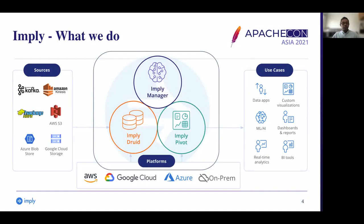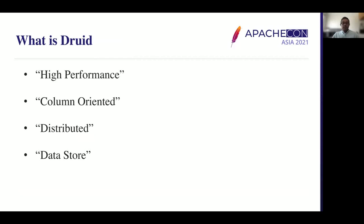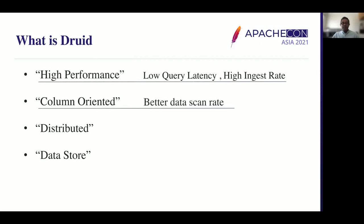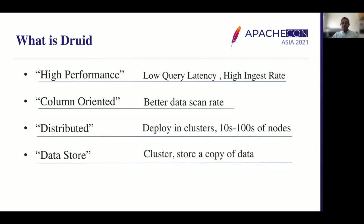For those who are not familiar with Druid, let me explain what it is. Druid is an open source Apache project. It's a high-performance, column-oriented, distributed data store. High performance means low query latency and high ingestion rate. Column-oriented means a better possible scan rate. Distributed means it can be scaled to hundreds to thousands of nodes. A copy of the data is stored locally and queried from it, which is one of the reasons Druid is very fast compared to other analytical platforms.